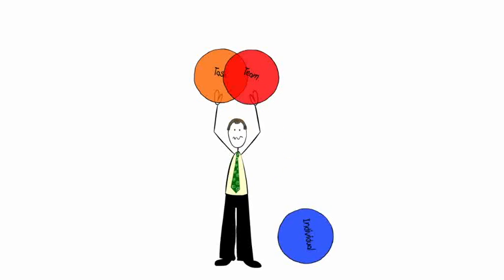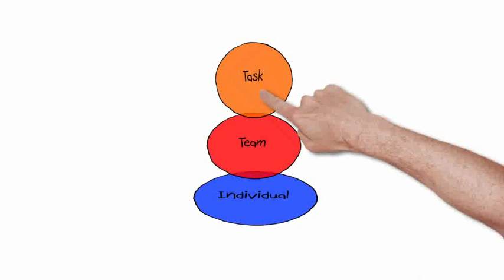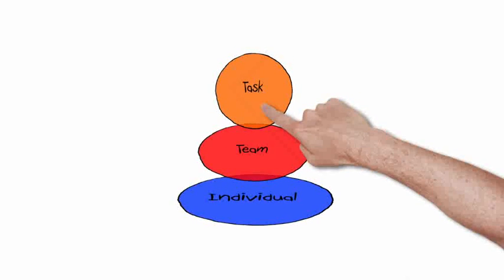The fiddly part is that the three elements can conflict with each other. Pressure of the goal increases pressure on the group to concentrate on the task, to the possible detriment of the people involved.